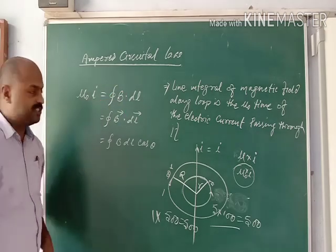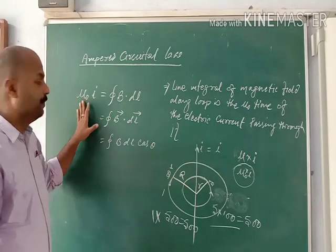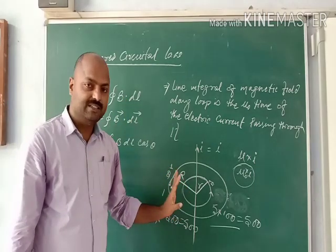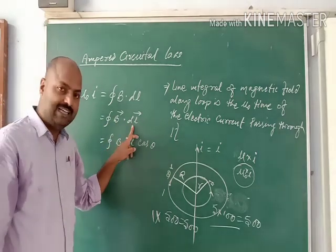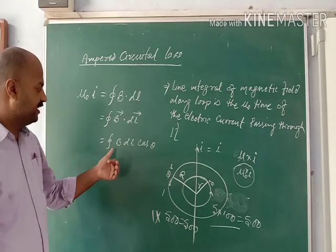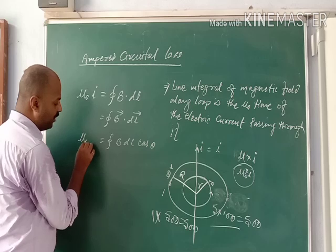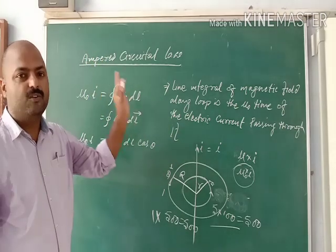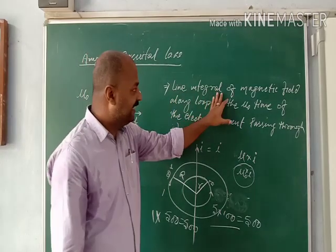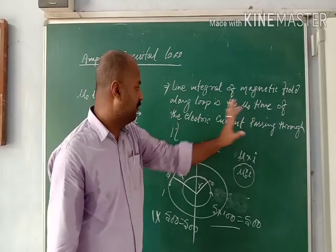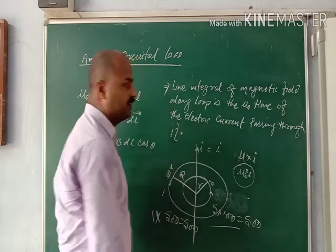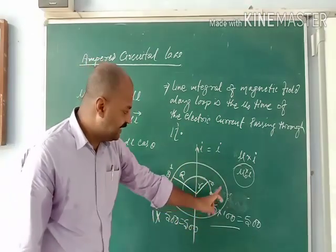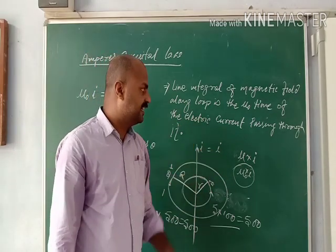This is Ampere's Circuital Law, which states that the amount of magnetic field produced by a current-carrying conductor is equal to μ₀I = ∮B·dl. Since B and dl are both vectors, the dot product gives ∮B·dl·cosθ. So finally the formula is: μ₀I = ∮B·dl·cosθ. In words, the line integral of the magnetic field along a loop equals μ₀ times the electric current passing through it.